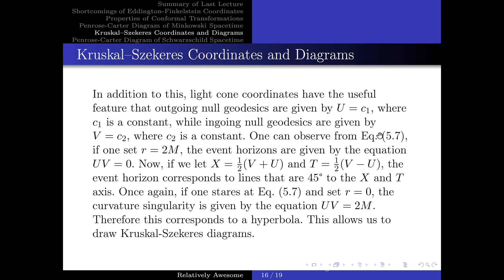One can observe from equation 5.7 that if one sets small r equals 2m, the event horizons are given by the equation capital U times capital V equals 0. Now, if we let capital X equals one-half times (capital V plus capital U) and capital T equals one-half times (capital V minus capital U), the event horizon corresponds to lines that are 45 degrees to the capital X and capital T axes. Again, if one sets small r to 0 in equation 5.7, the curvature singularity is given by the equation capital U times capital V equals 2m, and therefore this corresponds to a hyperbola.